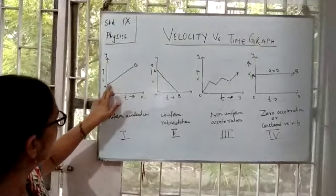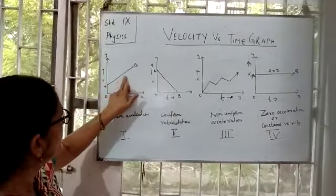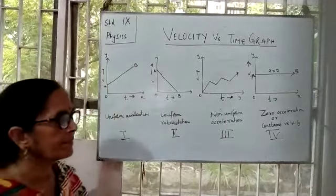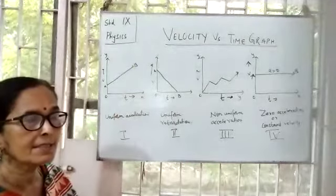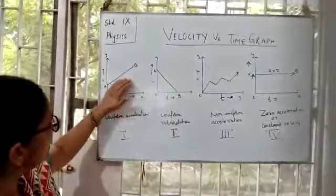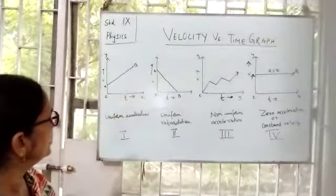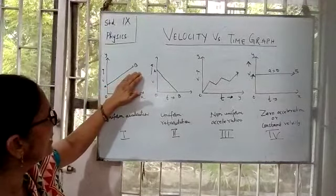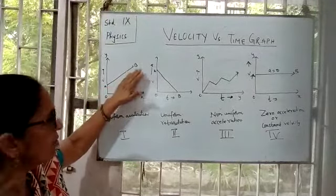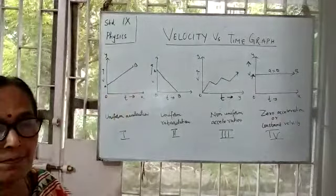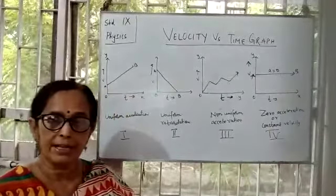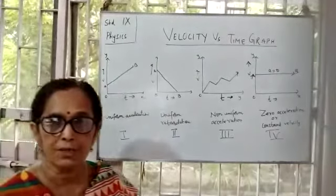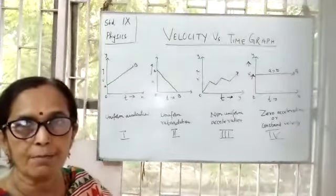In the first case, you can see that the graph line AB is a straight line moving in the upward direction. This indicates that the velocity of the moving object is increasing constantly with time. So what kind of acceleration does the object have? Obviously, it is uniform acceleration.